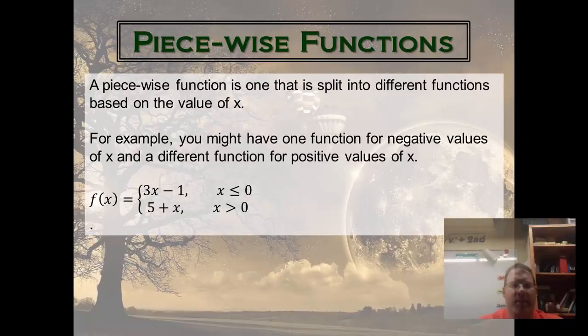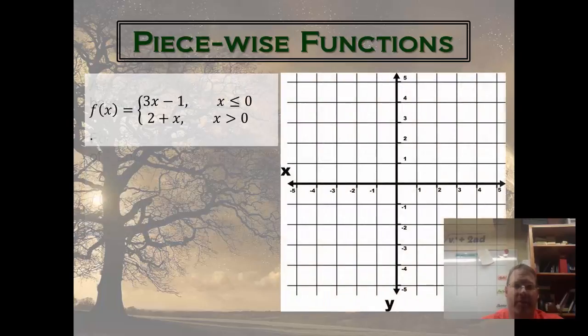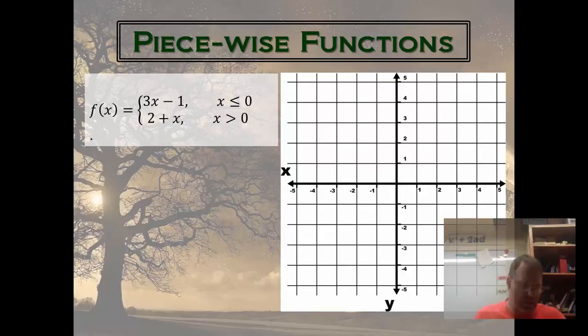So, let's take a look at this exact example and figure out how to graph it on this graph here. Well, first of all, this number line is going to act as kind of our divider. Because on one side of it, we have one equation, and on the other side, we have the other.